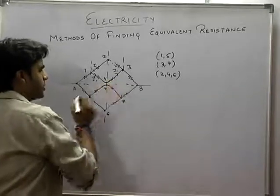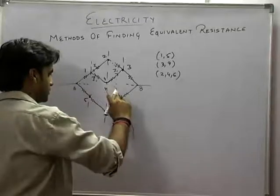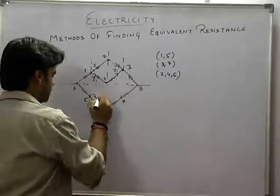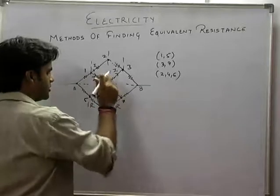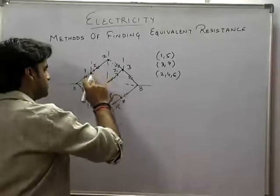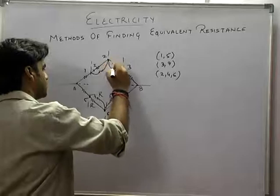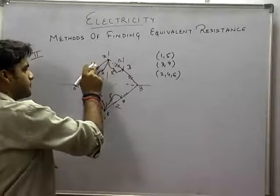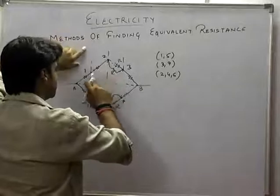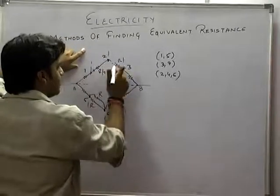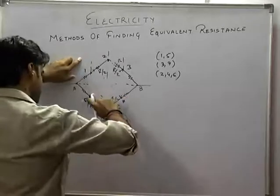Ye bhi 4 ho gaya, ye bhi 4 ho gaya. Ab 4 aur 6 same potential pe hain, to mein isko join bhi kar sakta hoon. This is r, this is r, this is r, this is r, this is r. Similarly, 2 aur 4 bhi same potential pe hain, so mein isko bhi join kar sakta hoon. This is r, this is r, this is r, this is r. Ab ye circuit bohot simple ho gaya — ye resistance kitni hogi: total R by 2. This is R by 2; similarly ye bhi R by 2 hogi — parallel mein hai. Ye wali bhi R by 2 hogi, ye bhi R by 2 hogi.